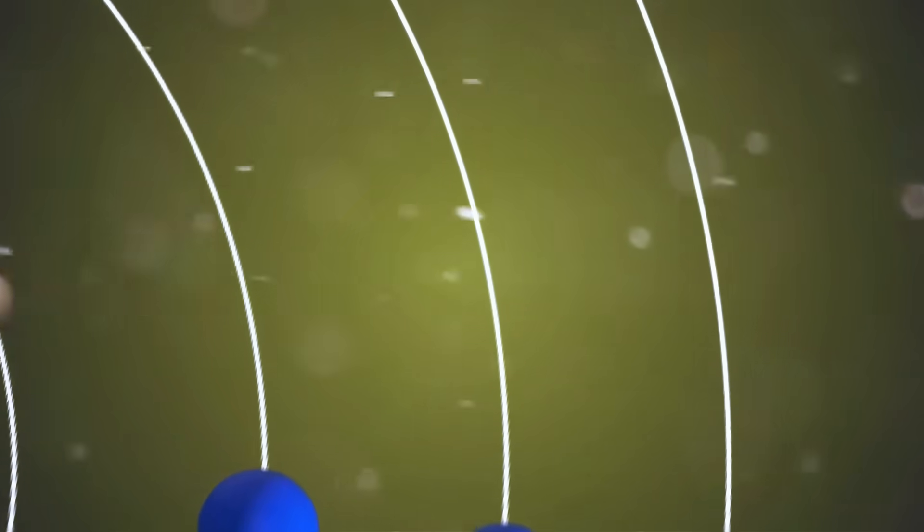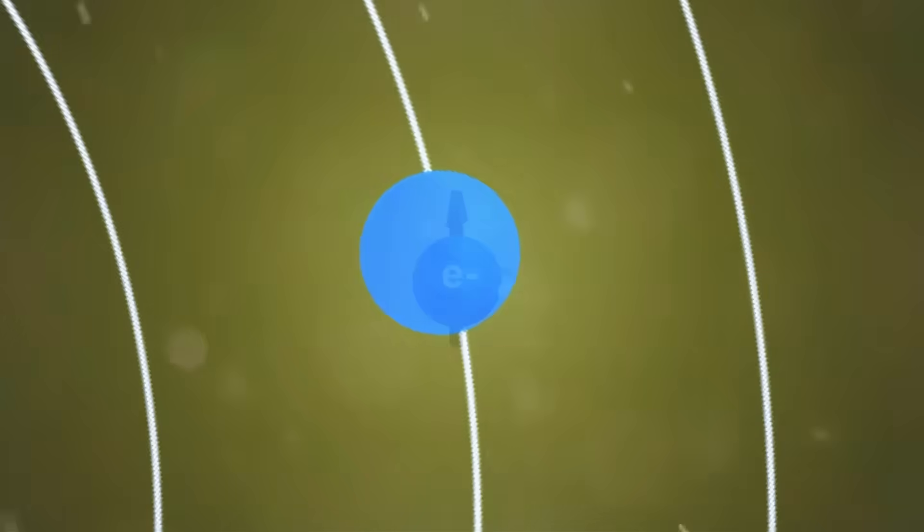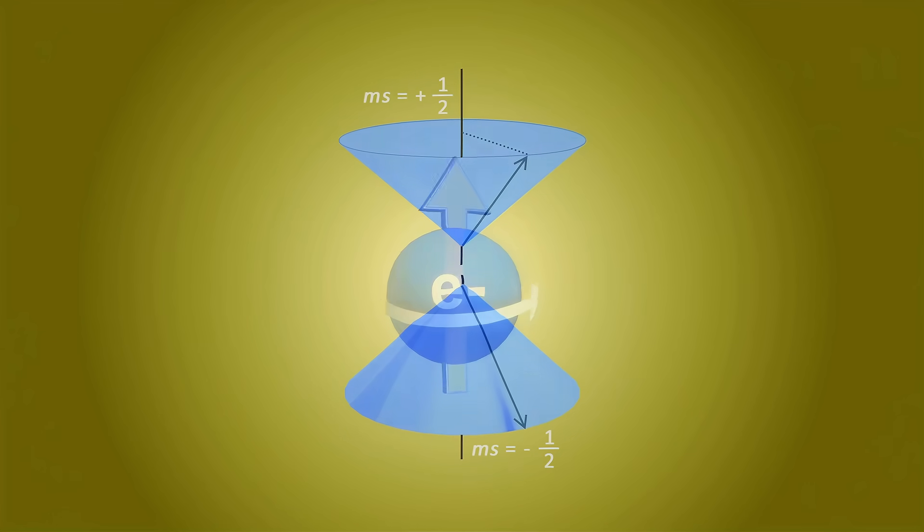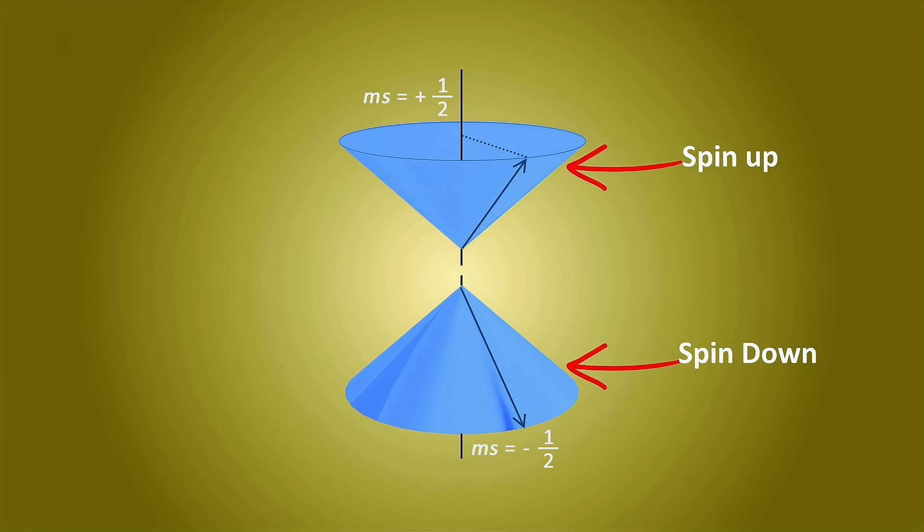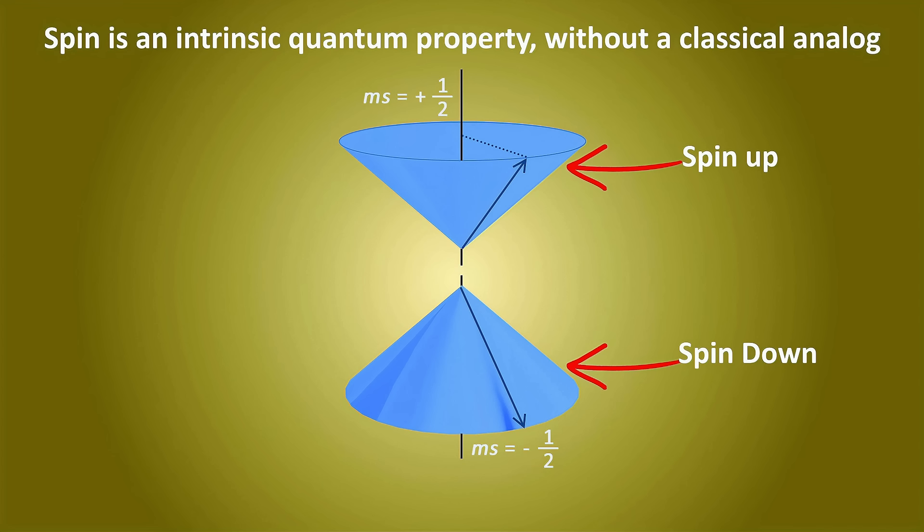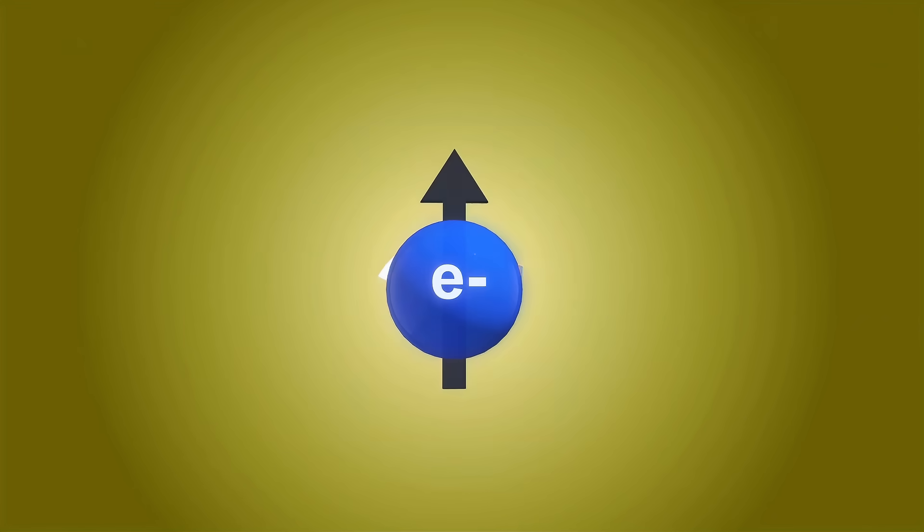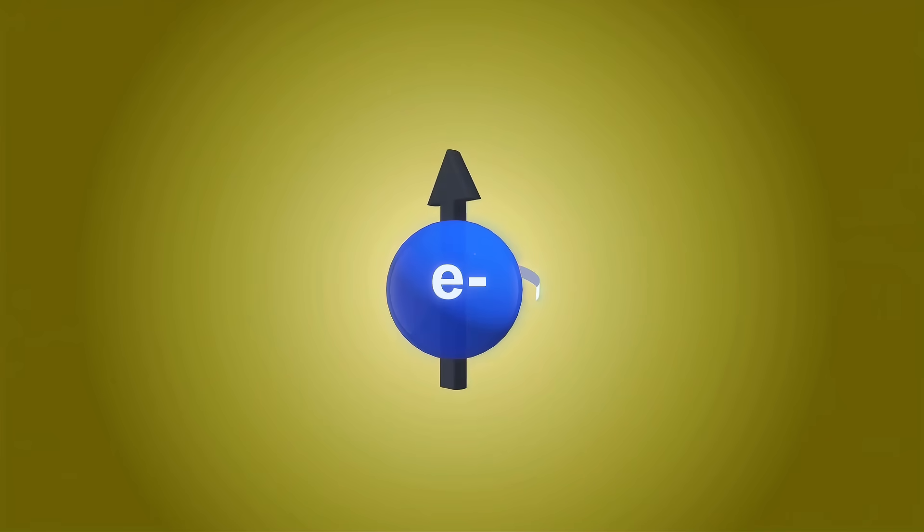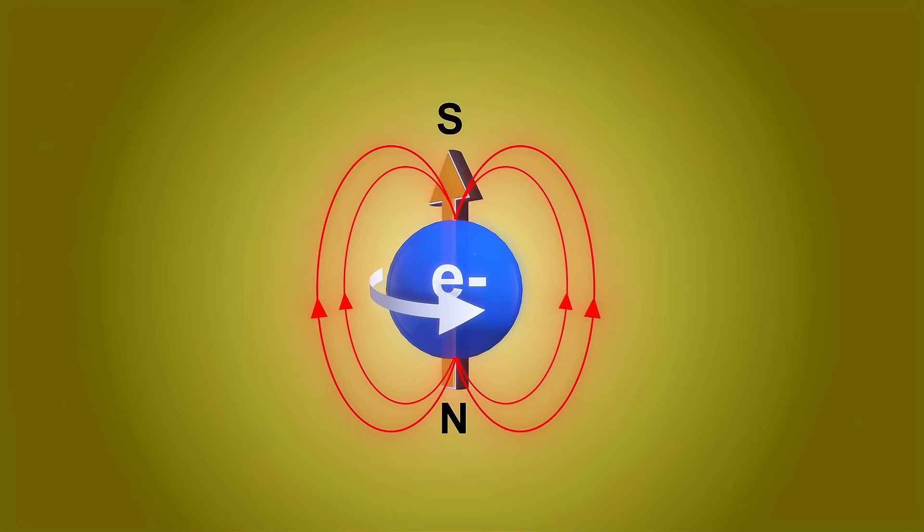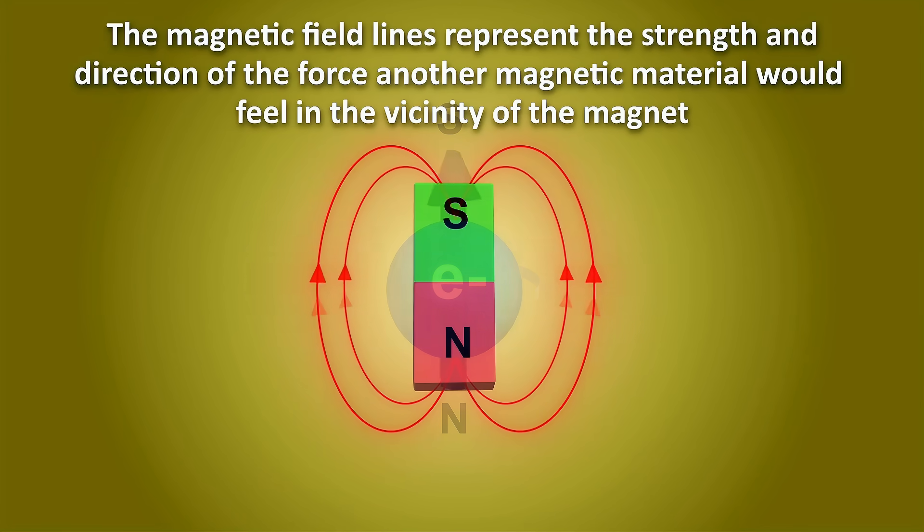Each electron doesn't just orbit randomly. Electrons have a quantum property called spin. Spin is not easy to visualize because it is a quantum property. It's not exactly like a spinning top, but it is the type of intrinsic angular momentum that particles possess, even though they don't physically rotate. It's intrinsic, meaning it's a property that electrons have, similar to the way they have a negative charge. Each spinning electron generates its own miniature magnetic field. The magnetic field lines represent the strength and direction of the force another magnetic material would feel in the vicinity of the magnet.